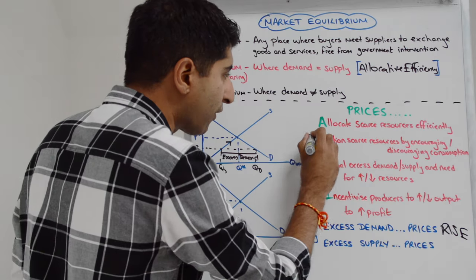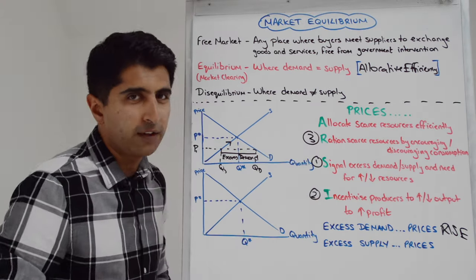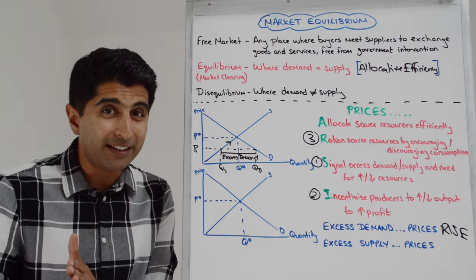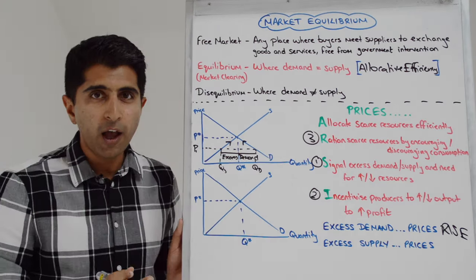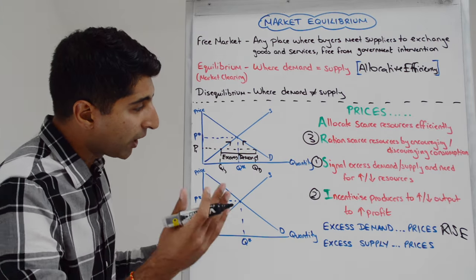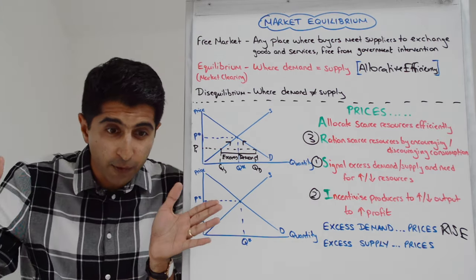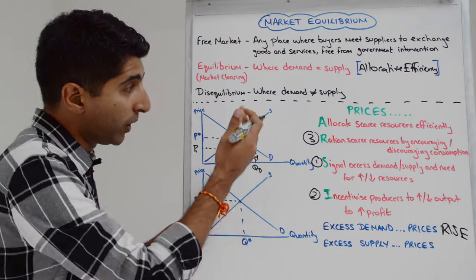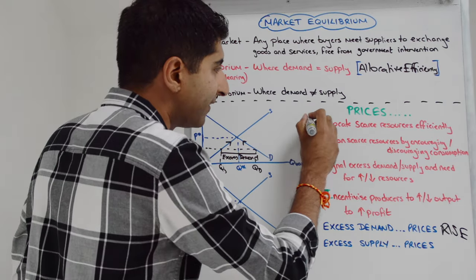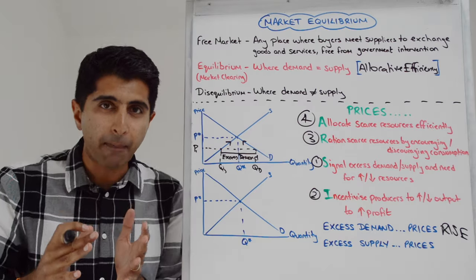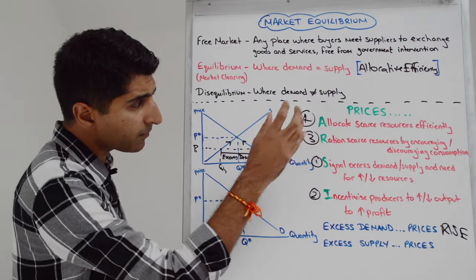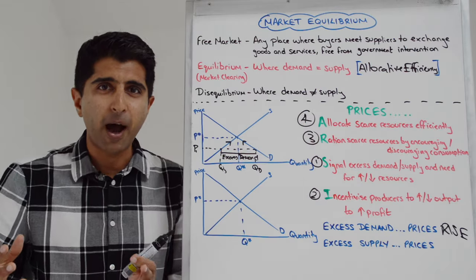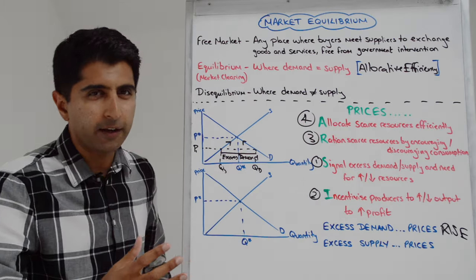At the same time, higher prices ration. They ration scarce resources, in this case, by discouraging consumption. We can see that via a contraction along the demand curve. Where do we end up? Boom. We get Q star with those last two effects together, which is at equilibrium in the market, which we know is allocative efficiency. Bam. That's how excess demands are dealt with in free markets. Seeing the forces of free markets, the functions of the price mechanism in action.